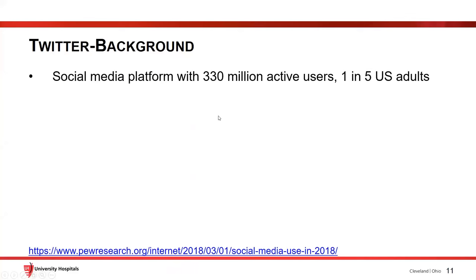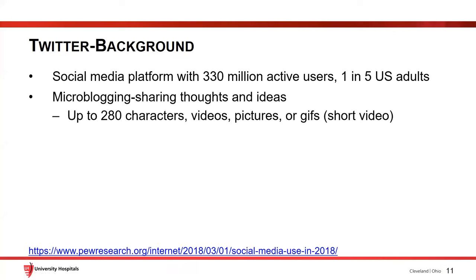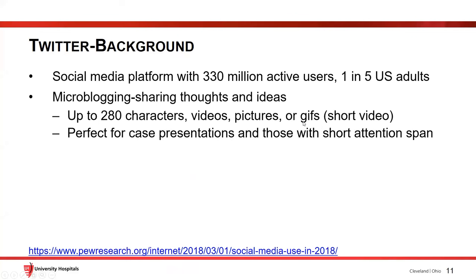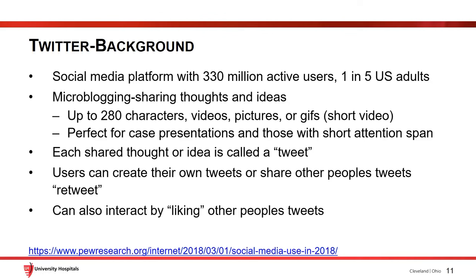So a little bit of background about Twitter or X. At the time of this publication in 2018, there were 330 million active users. One in five U.S. adults had a Twitter or X at the time. It's a microblogging platform where you can share your thoughts in 280 characters using videos, pictures, or GIFs. It's great for case presentations if you put some images in there, and great for those with a short attention span. Each thought is called a tweet. You can interact with other people's tweets by liking, reposting, or retweeting them.